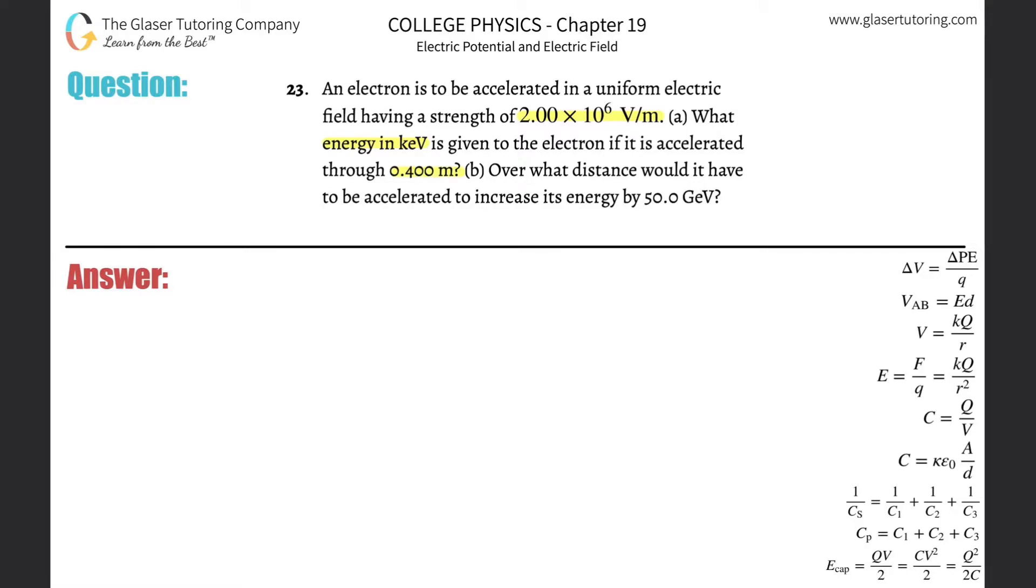One other important thing I didn't highlight is it says an electron. So let's write down what we know. They tell us the electric field strength here is going to be 2 times 10 to the 6 volts per meter. They want us to calculate the energy, in other words, the change in the electron's potential energy. They also tell us that the distance in which it was accelerated through is 0.4 meters.